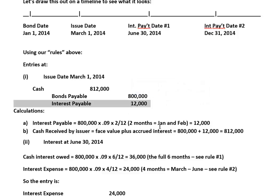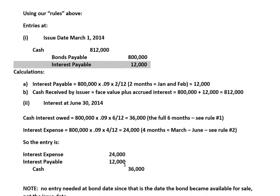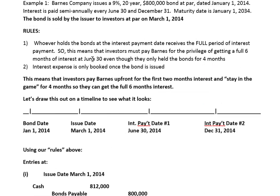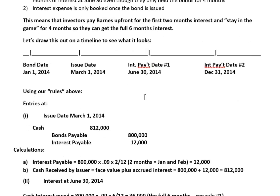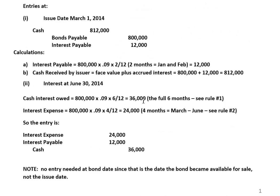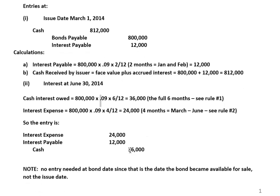Don't forget, this $12,000 will be paid back to the investors on June the 30th, when the full six-month interest payment is made. On June the 30th, our rule says we're going to pay them a full six months of interest, even though they've only been in the game for four months. So we're going to pay them $36,000 — that's $800,000 times the coupon rate of 9%. And your rates, unless told otherwise, are always annual rates, so this 9% is for the year but we only want it for six months, up to June 30th. That gives us $36,000.